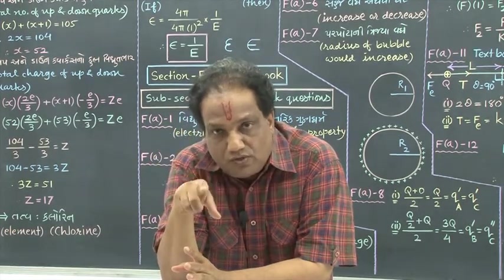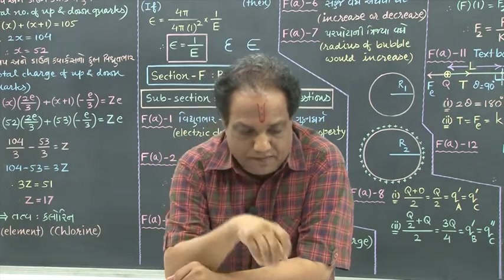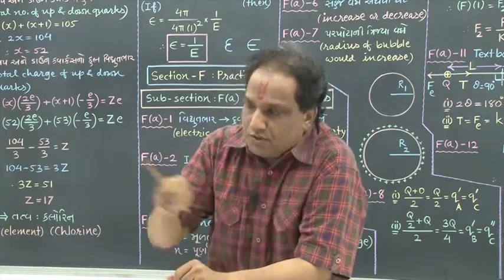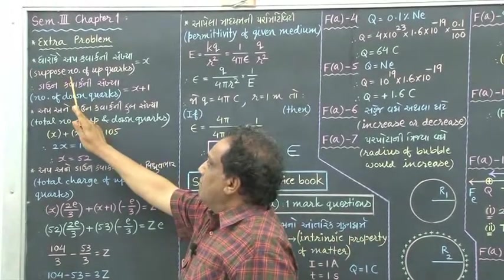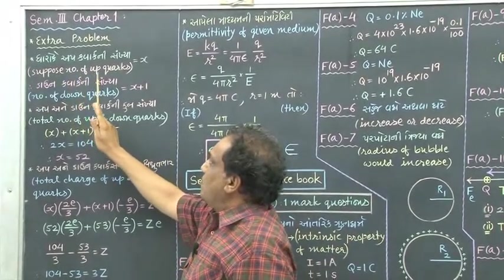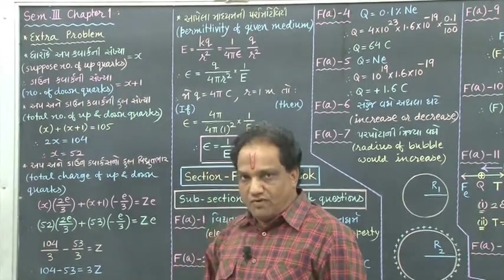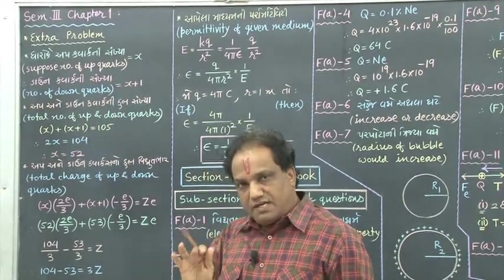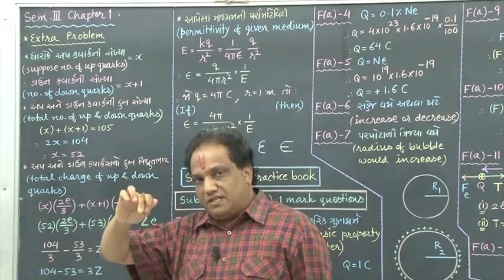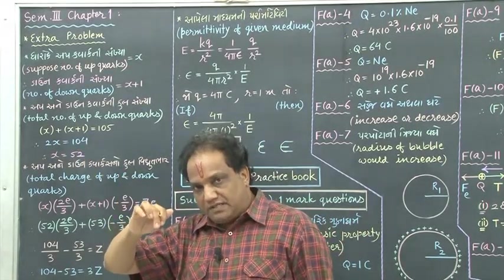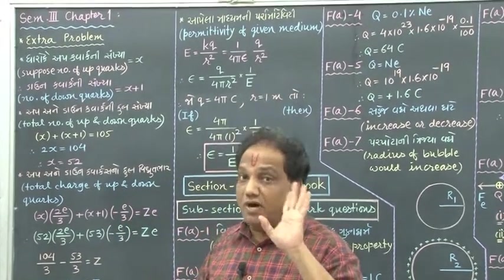You have the notes, so you can refer to it. Now let us go for the solution. Suppose the number of up quarks is x — I just assume x. Then it is given in the statement that the number of down quarks is greater than the number of up quarks by 1.